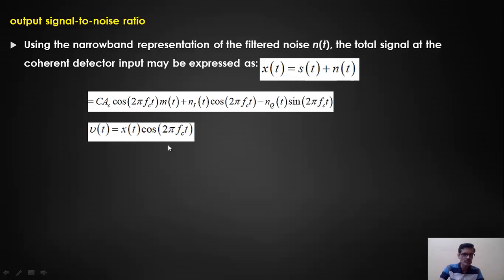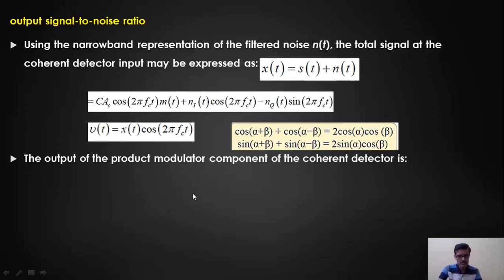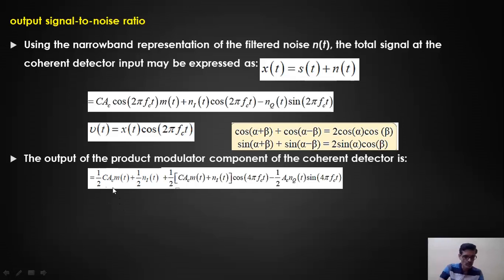Multiplying x(t) by cos(2πfct) and applying trigonometric identities (product-to-sum formulas), the result contains both low-frequency and high-frequency (2fc) components. After simplification, v(t) = ½·c·Ac·m(t) + ½·nᵢ(t) + [½·c·Ac·m(t) + nᵢ(t)]cos(4πfct) − ½·Ac·nq(t)sin(4πfct).